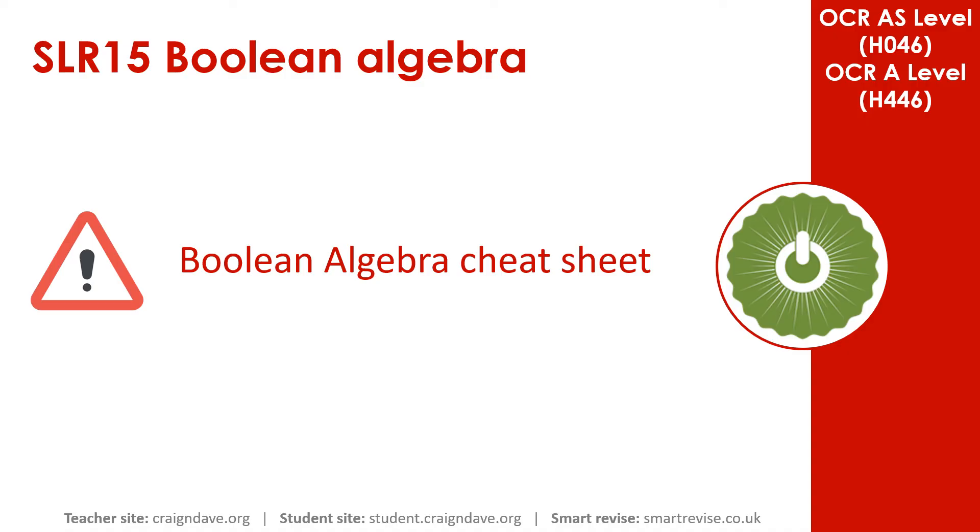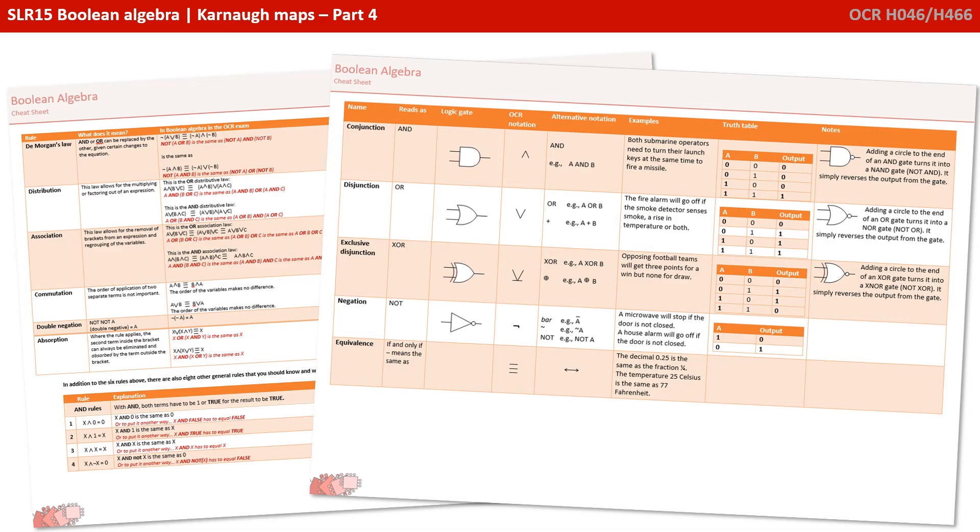So just before we end this video, we want to make you aware of our freely available Boolean Algebra Cheat Sheet. This is a double-sided cheat sheet that comes in A4 or A3 version which can be used as posters. And it covers all the information on Boolean Algebra, various logic gates, truth tables, definitions, and a lot more material we'll be going over in future videos. All in one handy double-sided sheet.